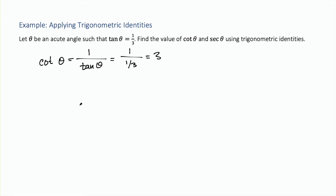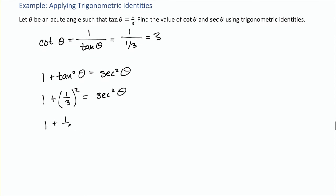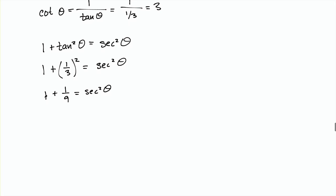To find secant, we use the Pythagorean identity: 1 + tan²θ = sec²θ. Substituting tangent of theta as 1/3, we get 1 plus (1/3)² equals sec²θ, so 1 plus 1/9 equals sec²θ. Getting a common denominator gives 9/9 + 1/9 = 10/9 equals sec²θ. Taking the square root, secant of theta equals the square root of 10 over 3.